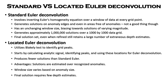For standard Euler deconvolution, it involves inverting Euler's homogeneity equation over a window of data at every grid point. It also generates solutions on anomaly edges and even in areas which are free of anomalies. This is one of the downsides of the standard Euler deconvolution. It also has an unchanging window size, biasing towards solutions of varying magnitude.